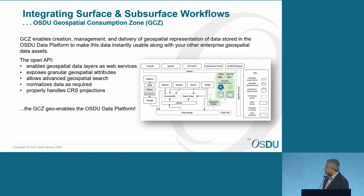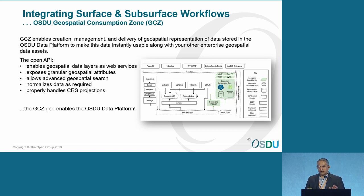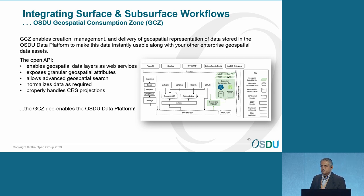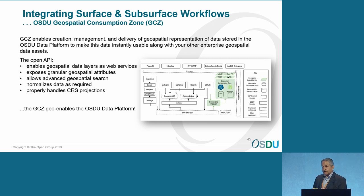We allow geospatial search, including irregular polygon searches. We normalize the data because many data sets in OSDU use different schemas, and bringing them into a normalized view is important for mapping applications. We also handle coordinate conversions, so you can work in local projections and show the data on a world map. Fundamentally, the Consumption Zone geo-enables and provides map services out of the OSDU data platform.